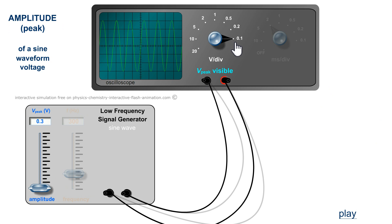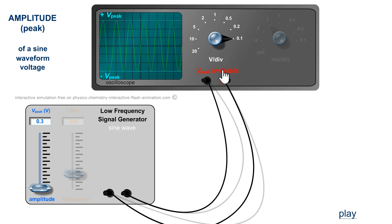Out of 0.1 volts per division, we count the divisions — three divisions. Each division corresponds to 0.1 volts, that's 0.3 volts for V peak. The amplitude is V peak.